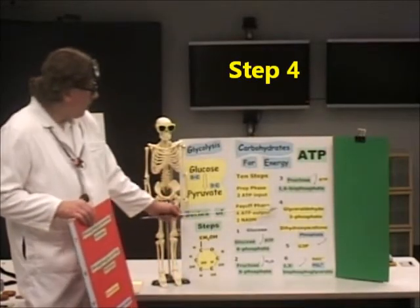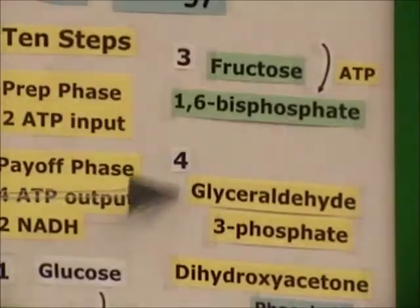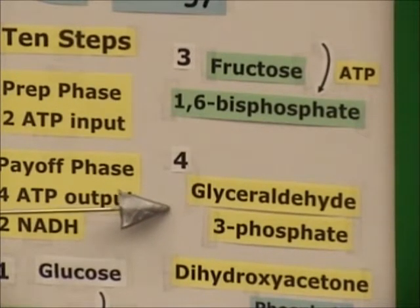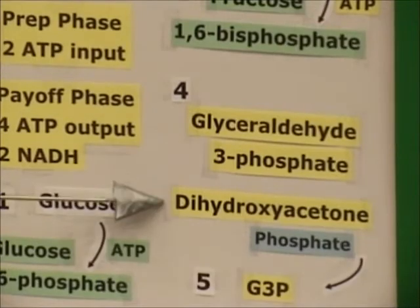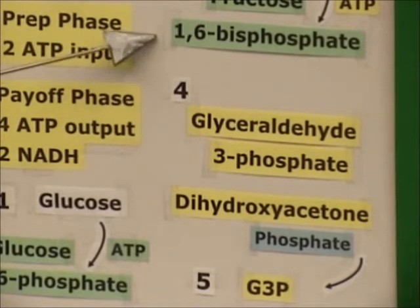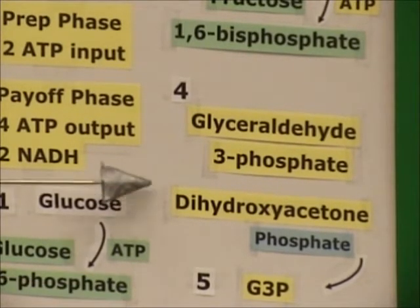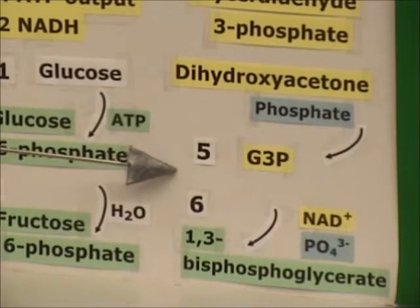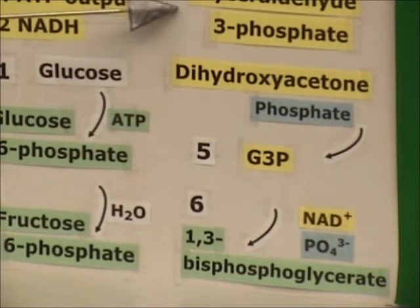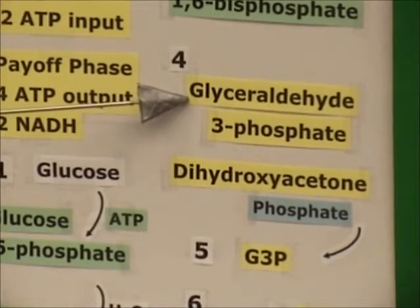Let's go to step 4. This is where the excitement is. We've gone through the adding of the ATPs — now we've got to cut the molecule in half. We're going to form two molecules: glyceraldehyde 3-phosphate and dihydroxyacetone phosphate. When we cut fructose 1,6-bisphosphate into two different molecules, in step 5 the dihydroxyacetone won't stay as dihydroxyacetone for long — it's going to form another glyceraldehyde 3-phosphate, which is why we call it G3P.